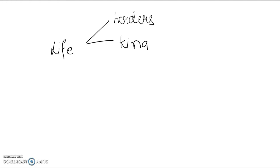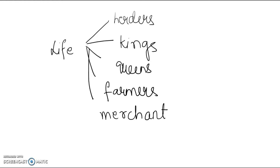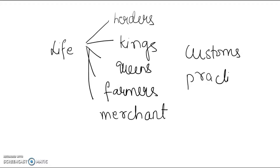We had different kings, we had different lifestyles — the queens, the farmers, the peasants, the craftsmen, the merchants. They had different lifestyles, they had a different past, they had different cultures, different customs, and also different practices to follow. So everybody had a different past, which was quite different from the other person's past.